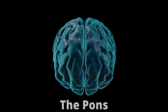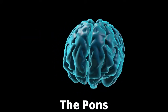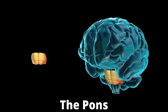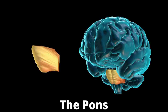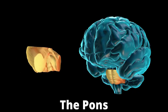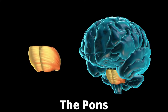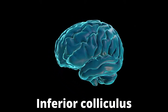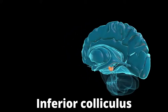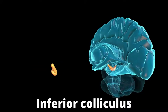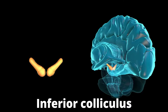The superior olivary nuclei, also known as the superior olive or superior olivary complex, are located in the pons of the brain, where they are involved in measuring the difference in sound intensity and azimuth. The superior olivary complex receives auditory information from the cochlear nuclei. The inferior colliculus is located in the midbrain and plays a role as a relay for auditory information coming from the two ears and its integration. It is also involved in distinguishing between pitch and rhythm, and receives auditory information from the superior olivary complex and the auditory cortex.